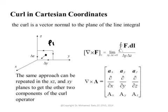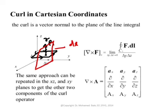The curl has three components. You calculate each by drawing a tiny area element in each of the three orthogonal planes around the point. A contour in the y-z plane gives the x-component; a contour parallel to the x-y plane gives the z-component; a contour parallel to the x-z plane with dimensions dz and dx gives the y-component of the curl. These three line integrals correspond to the three differential area elements we discussed in earlier lectures.